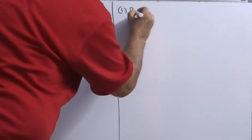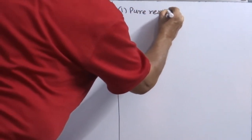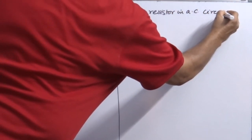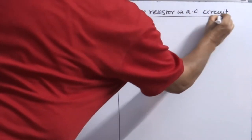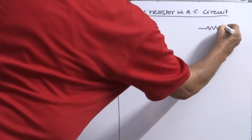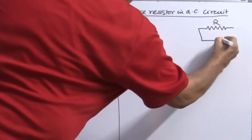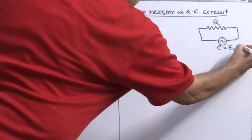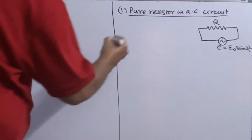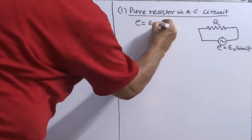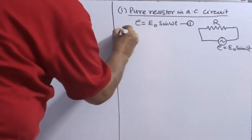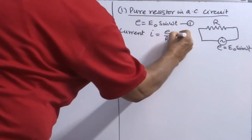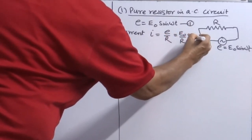The first element is a pure resistor in AC circuit. Consider a pure resistor of value R connected across an alternating EMF source E = E₀ sin(ωt). The applied EMF is E₀ sin(ωt). The current through the resistor is I = E/R = (E₀/R) sin(ωt), where E₀/R is the maximum current.